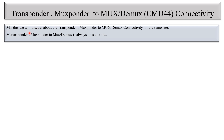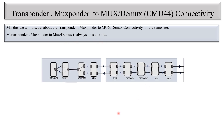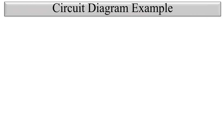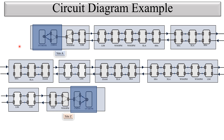In this video we will discuss Transponder-Muxponder to MUX-DMux connectivity. The Transponder-Muxponder and the CMD44 are placed on the same location — Transponder-Muxponder to MUX-DMux is always on the same side. I have taken a circuit reference to discuss this connectivity: Transponder-Muxponder to CMD44. This is essentially the circuit diagram example, or the DWDM signal flow of a particular channel or wavelength.